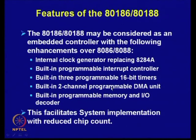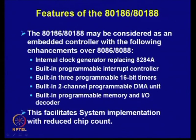In the case of 8086, the DMA controller was necessary outside the chip, but in 80186 a two-channel programmable DMA unit is built-in. There is also a built-in programmable memory and I/O decoder — when building a complete system, decoder ICs are needed to select memory and I/O devices. In 80186, these decoders were incorporated on-chip. All these features facilitate system implementation with a reduced chip count, which is a very important requirement for embedded applications.